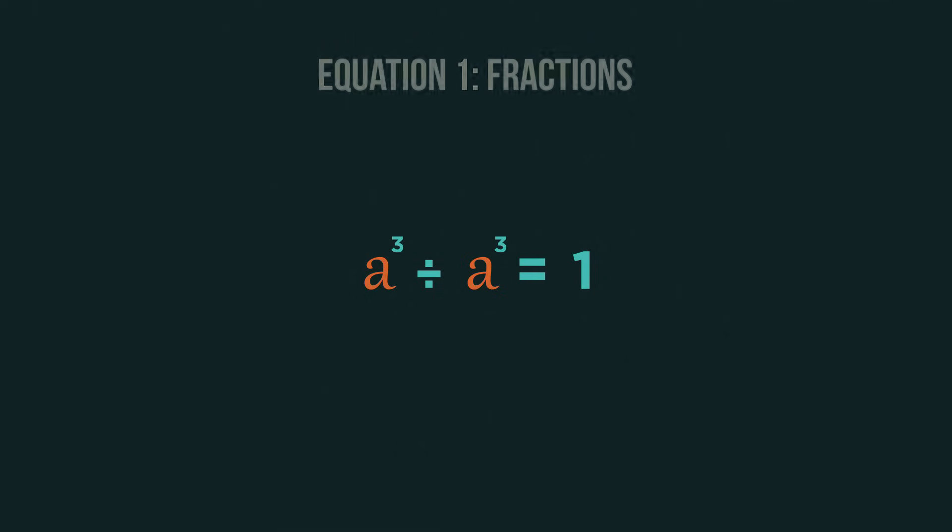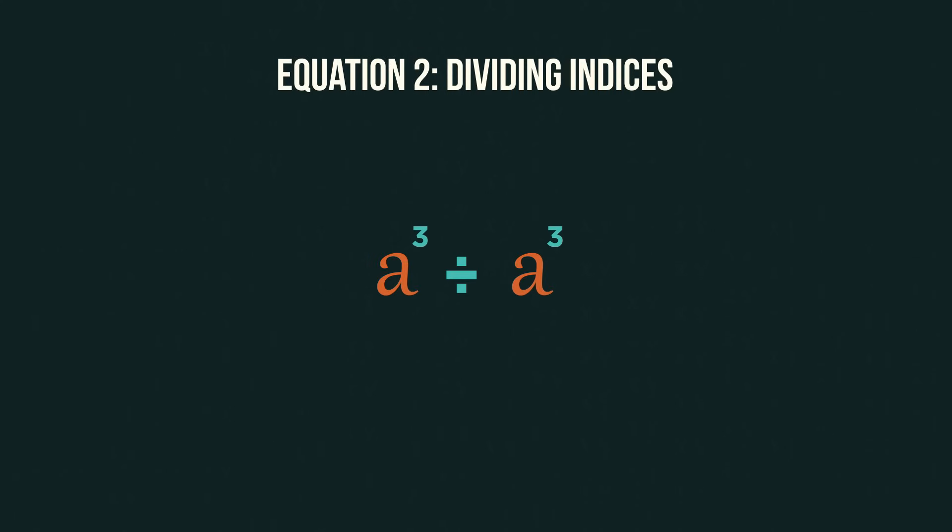That's our first equation. And then using our indices knowledge, when we divide, we subtract the powers. So three minus three is zero. And that's our second equation.